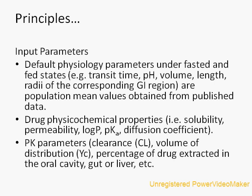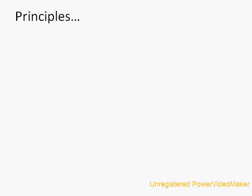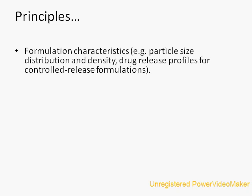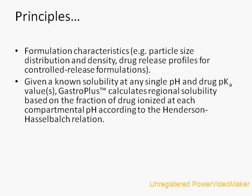Pharmacokinetic parameters include clearance, volume of distribution, and percentage of drug excreted in the oral cavity, gut, or liver. Formulation-related inputs include particle size distribution, density, and drug release profiles for controlled-release formulations. Given a known solubility at any single pH and drug pKa values, GastroPlus calculates regional solubility based on the fraction of drug ionized at each compartmental pH according to the Henderson-Hasselbalch equation.